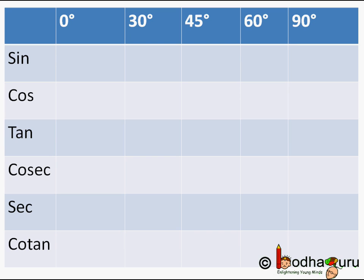We have learned in our earlier videos the values of sin for different angles: sin(0°) = 0, sin(30°) = 1/2, sin(45°) = 1/√2, sin(60°) = √3/2, and sin(90°) = 1. Using just these values, we will calculate the values of all the other trigonometric ratios.